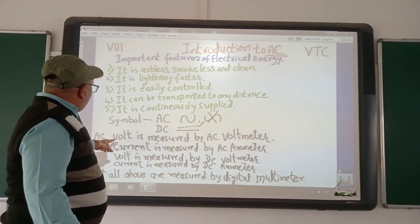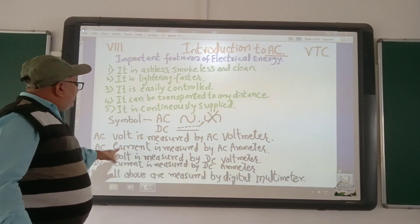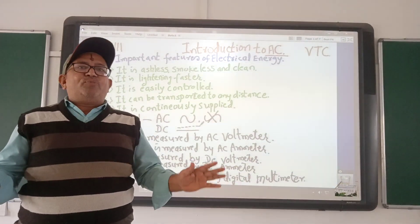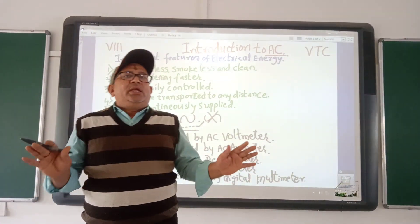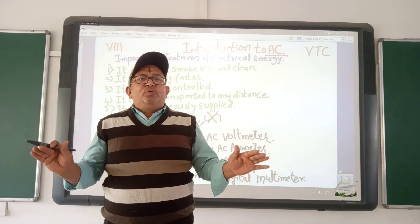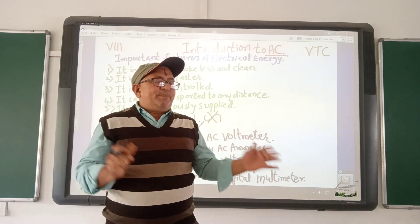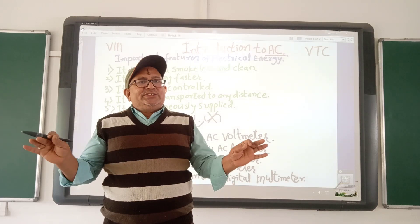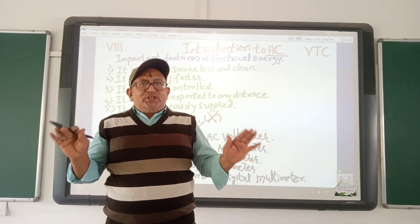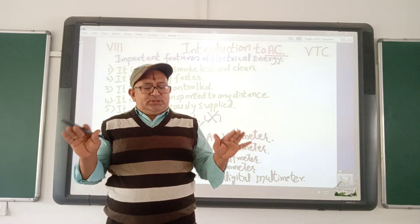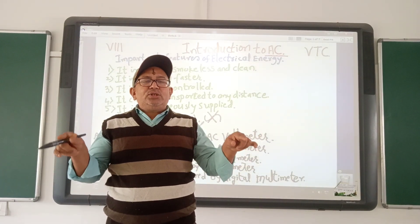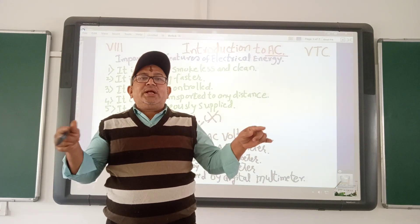Here we use the words volt and current. What do you mean by these? Volt is a unit of potential difference. It is equivalent to the pressure applied to water to make it flow through a pipe. Similarly, it is the electrical pressure that makes electrons flow through a conductor.